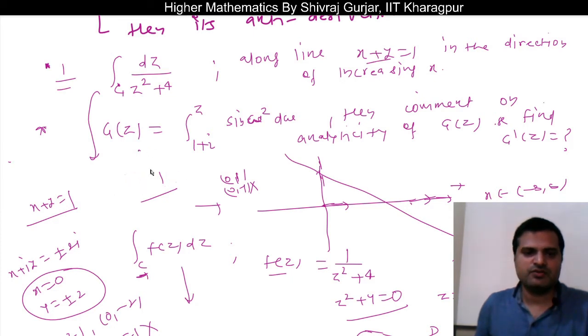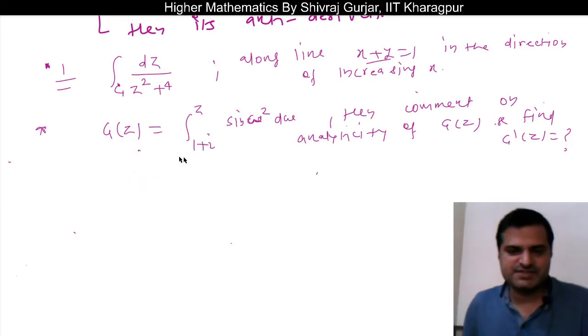This is direct implementation of fundamental theorem of calculus with respect to complex variable functions. So g(z) is given as integration of sin omega squared d omega, where omega limit is from 1 plus iota to z. Then comment on the analyticity of g(z) and find g dash z.